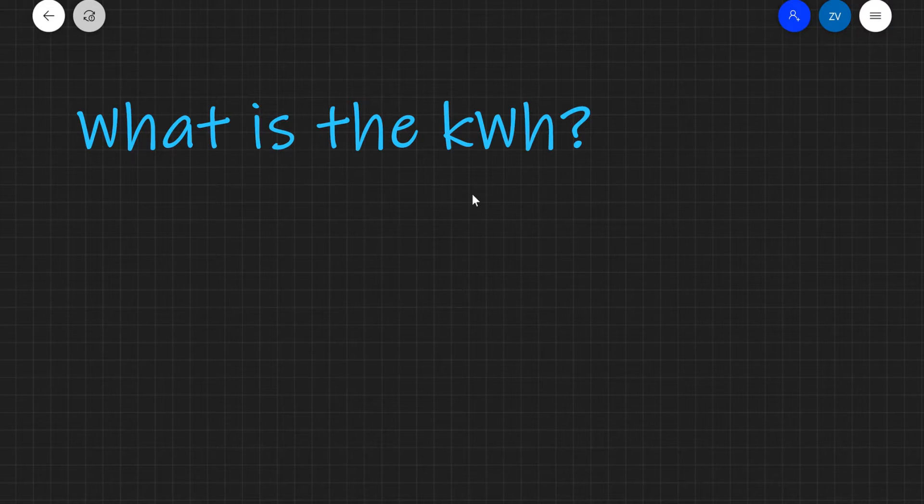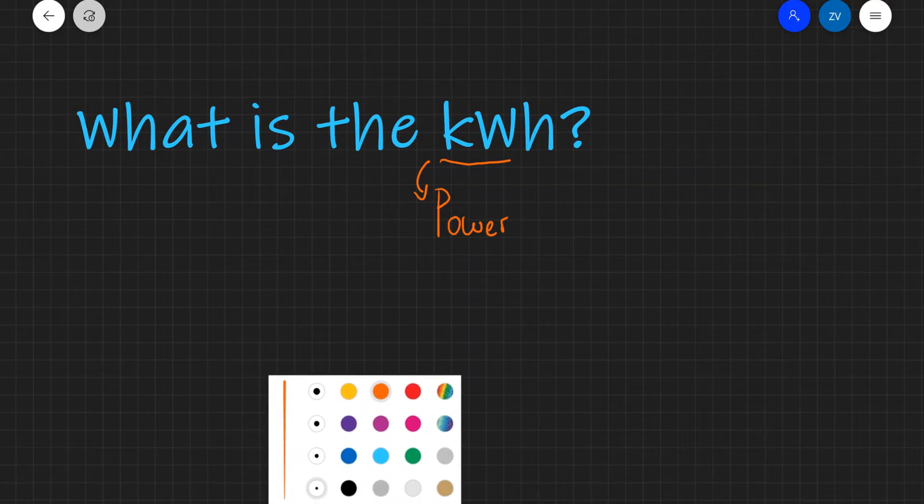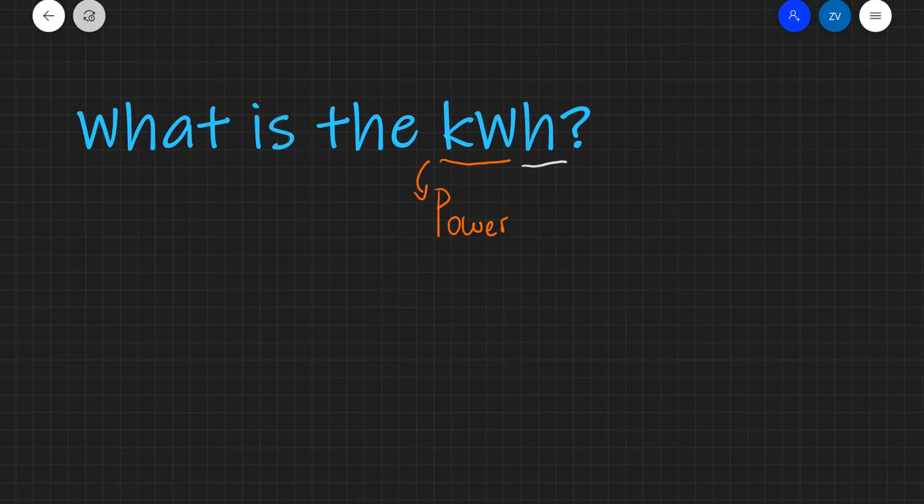First of all, the kilowatts, this over here will be a measure of power. So this over here will be a measure of power. On the other hand, the hour is a measure of time, like so. So this over here is a measure of time.